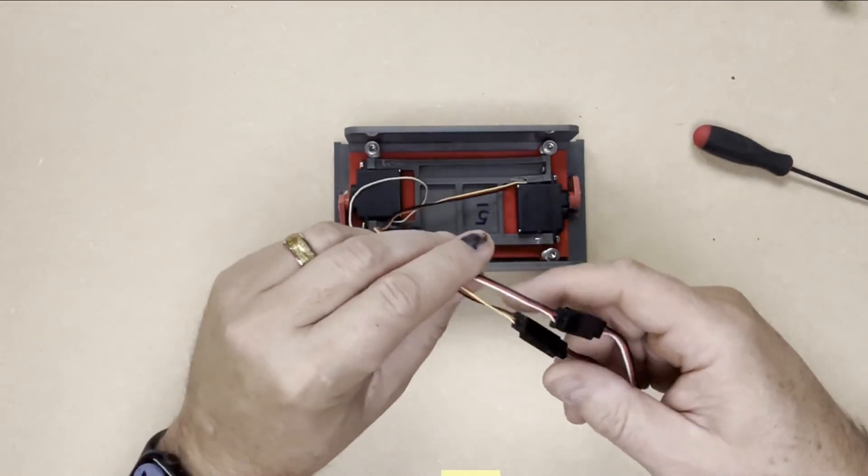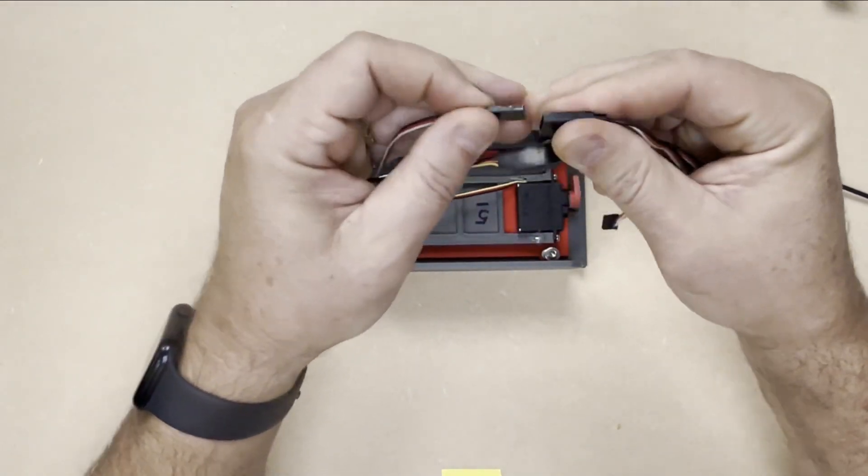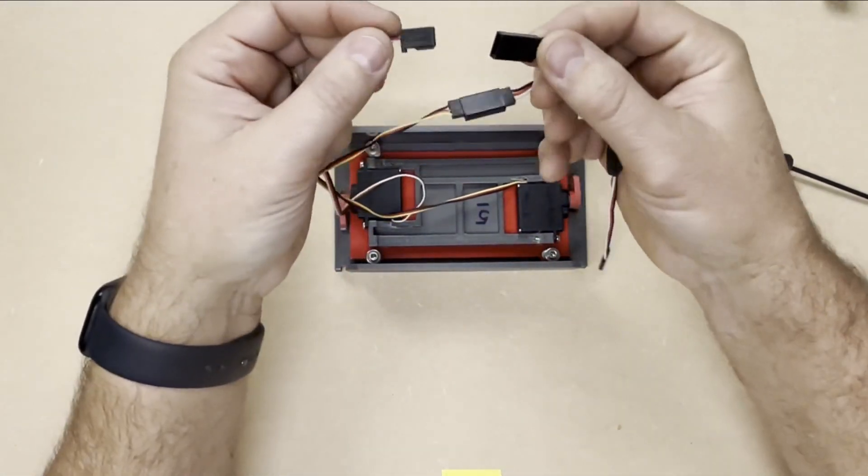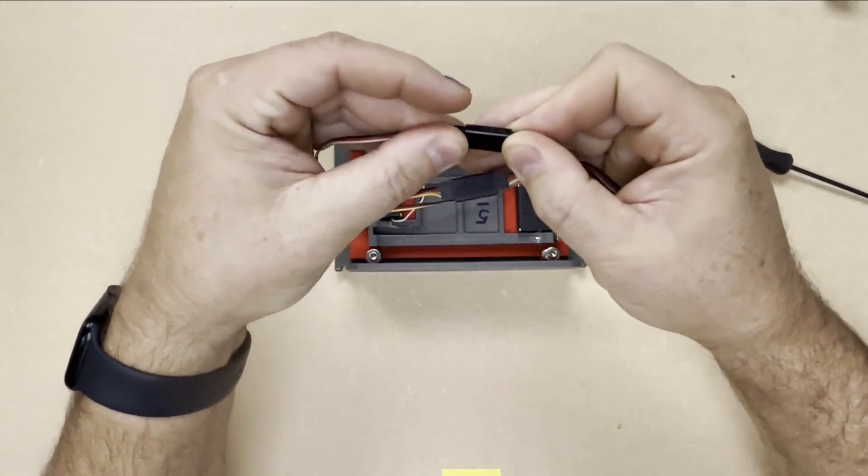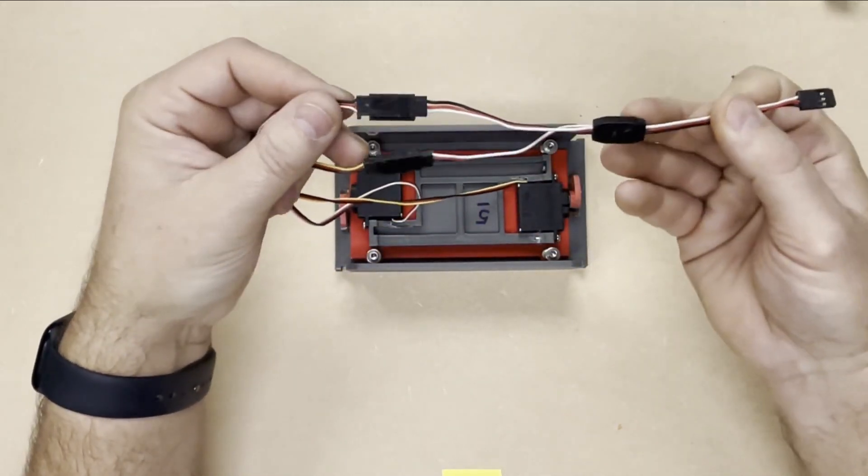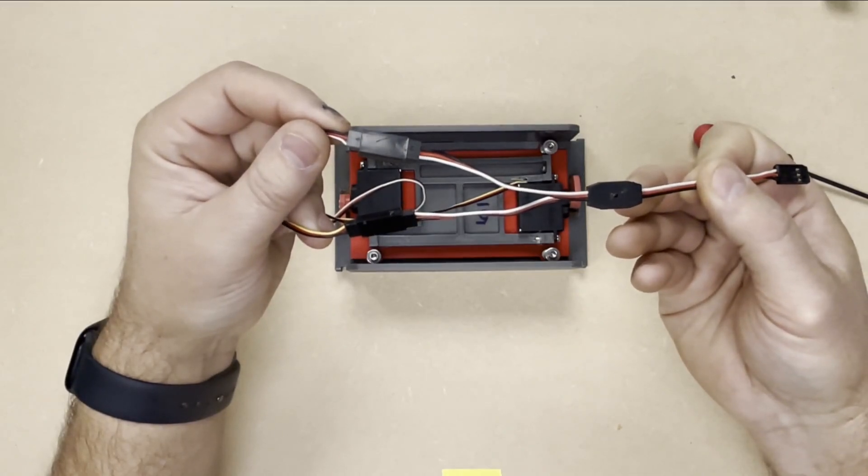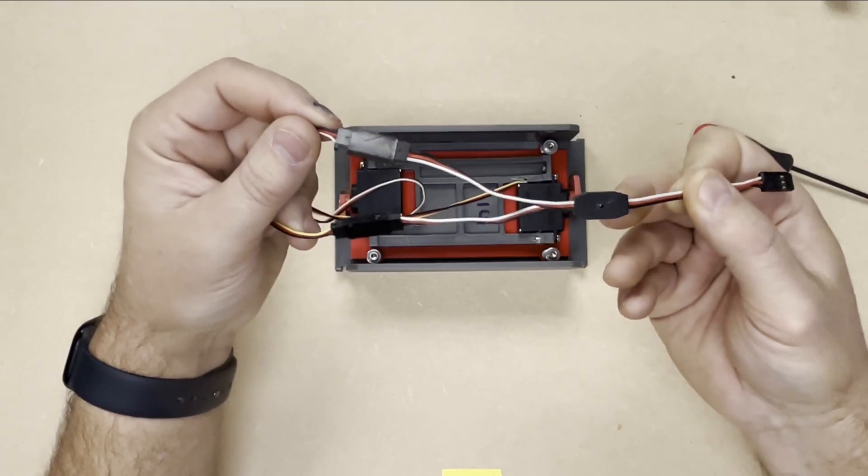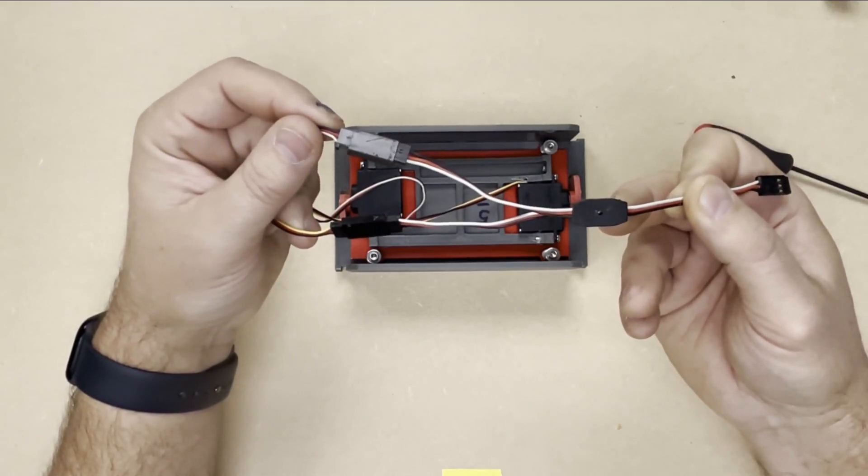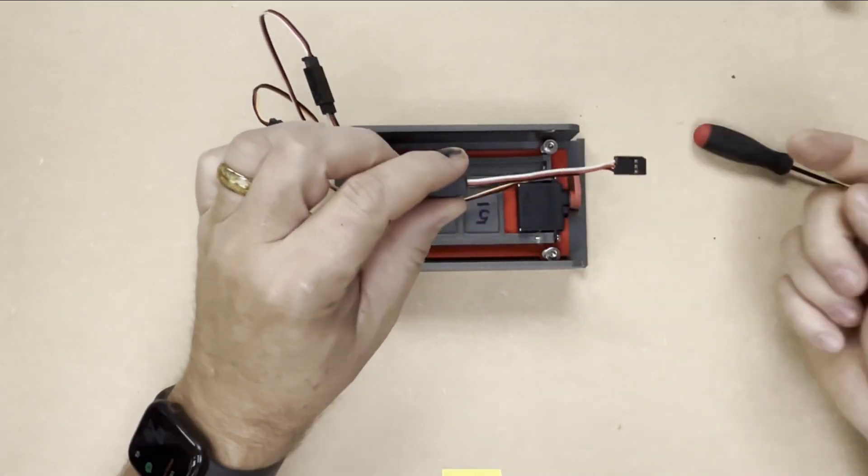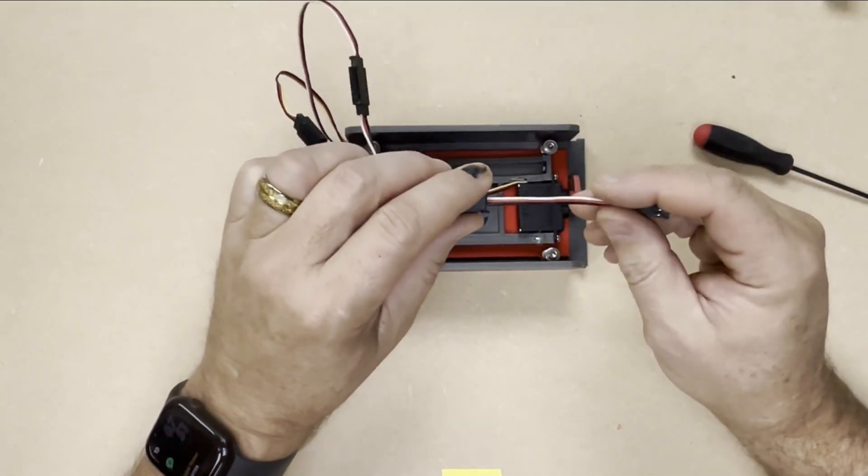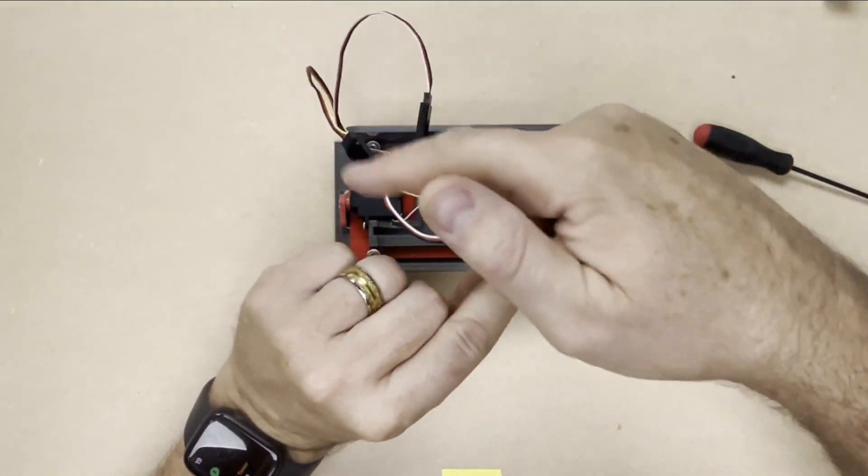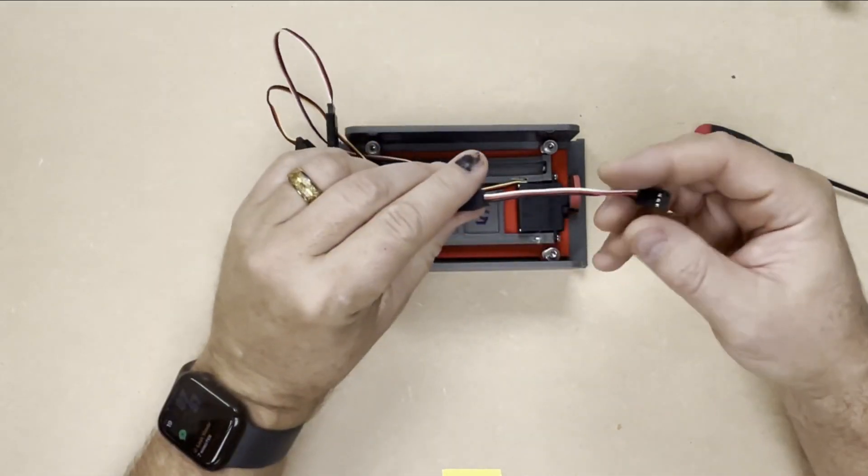So each servo comes with its own cable like this. And then what you'll need to get is what's called a splitter cable, which pretty much takes two to one or one to two, whichever way you want to go. But this is how you're going to get the information traveling from your system to both of the servos at the same time.